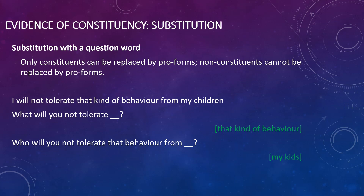This suggests that 'my kids' is actually a constituent. Another question we could phrase might be 'What will you not do?' and the answer would be 'tolerate that kind of behavior from my children.' We've taken a chunk of words and replaced it with the question word 'what,' which has moved to the front of the sentence. The fact that you can substitute it tells us that 'tolerate that kind of behavior' must be a constituent of some kind.